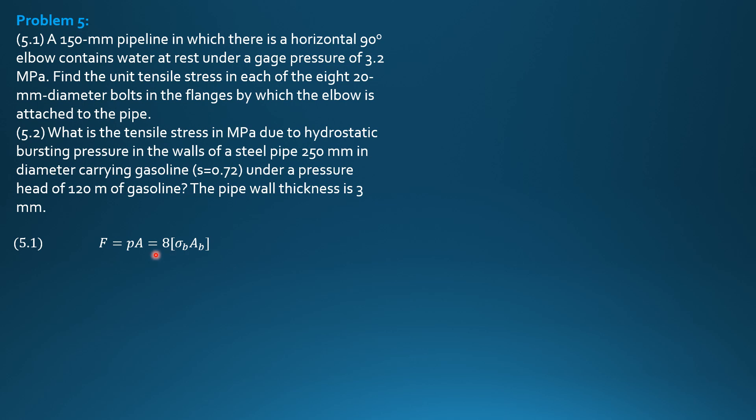So, pressure is 3.2 megapascals times pi, 75 mm radius squared. So this is in newtons. Then, 8 stress in megapascals, area of one bolt is... There are 8 bolts, stress in one bolt. Then area of one bolt is pi radius squared, pi times 10 squared. So the stress in the bolt will be in megapascals, and it is equal to 22.5 megapascals.